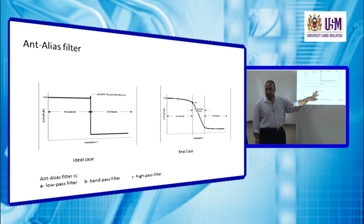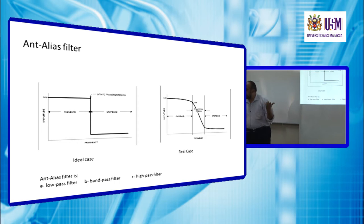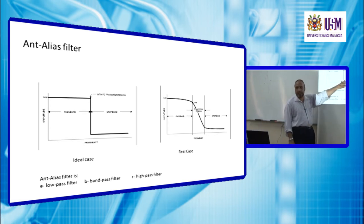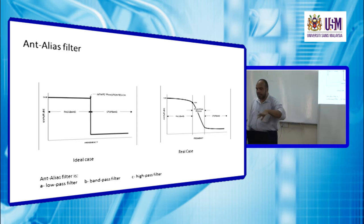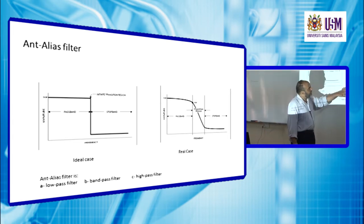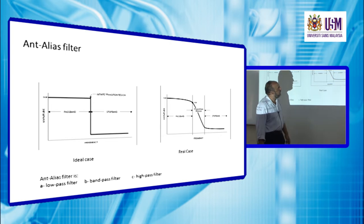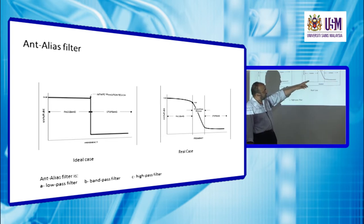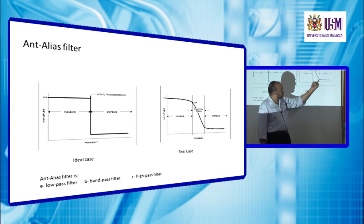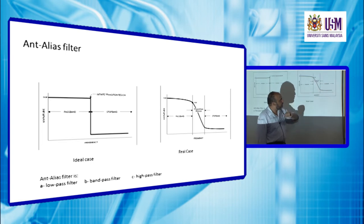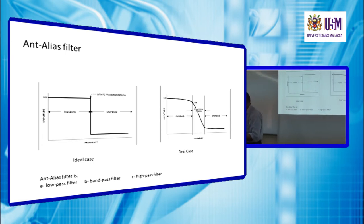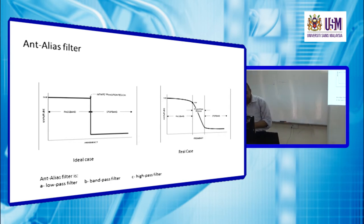However, this is the ideal case. You studied filter design before, so this cannot be done in reality. If we suppose this occurs, we end up with the so-called Gibbs phenomena. There is some energy leaked into the data that is virtual, is not real. However, this is the real case for anti-alias filter. This transition might be narrower or broader depending on the sample rate we are using.